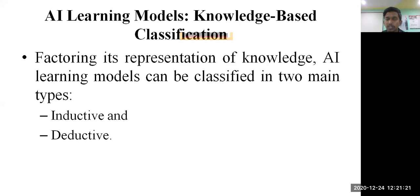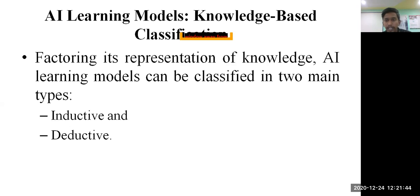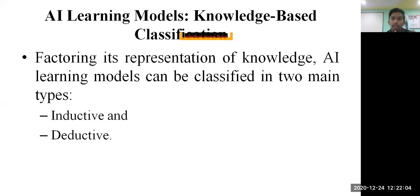Now let's discuss knowledge-based classification. AI learning models are classified into two types: feedback-based and knowledge-based. In feedback-based we have supervised, unsupervised, semi-supervised, and reinforcement learning. For knowledge-based classification, the representation of knowledge can be classified into two types: inductive and deductive. In our syllabus we have inductive-based learning; we are not covering deductive learning, but we'll try to understand both.